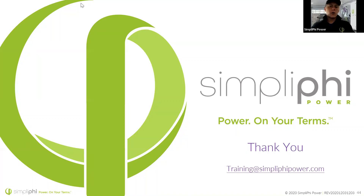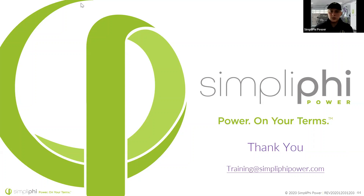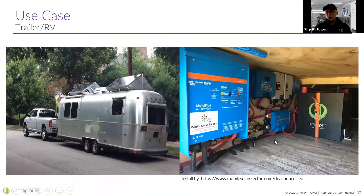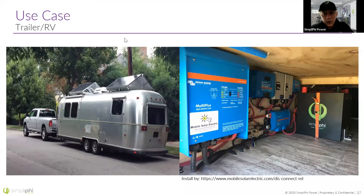Jerry wants to know where he can purchase a Victron BMV and a Simplify battery. You can purchase those from whatever distributor you're working with — for example, Northern Arizona Wind and Sun, which I showed in that installation. You can purchase from them and also get it installed by them if you need. Our batteries are made in the US — we do our manufacturing in Oxnard, California.